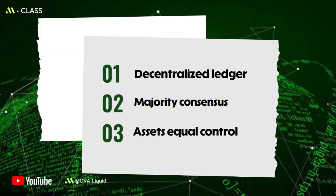Today you'll learn, starting with: decentralized trust, which emphasizes not relying on a single institution, but rather having distributed nodes collectively execute the same rules. Majority consensus rights mean that only widely accepted blocks are recorded and form history.